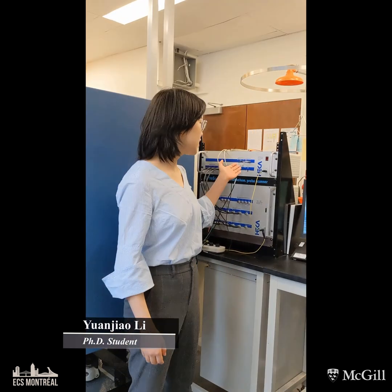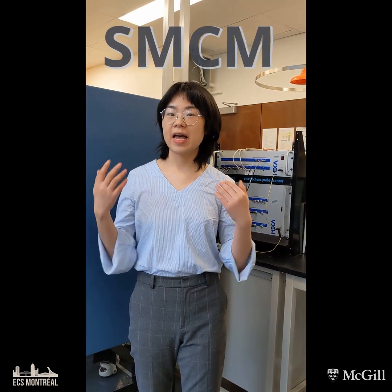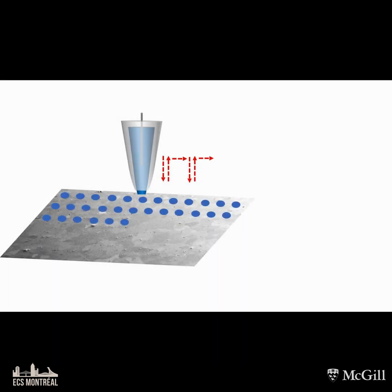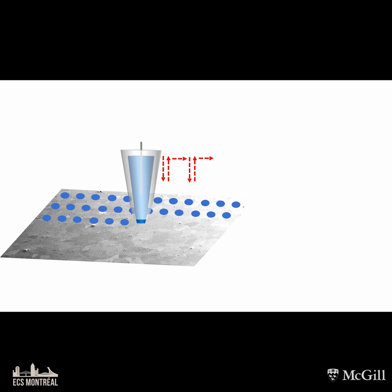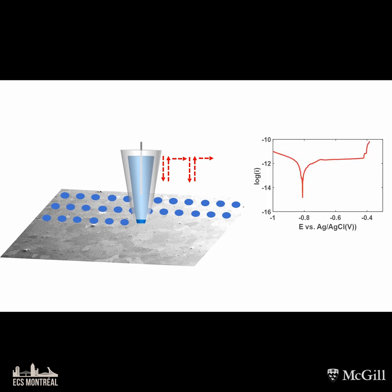Hello everyone, this is Yuanjiao. Using this equipment, we can run another technique: the scanning micropipette contact method, or SMCM. In the setup, a solution-filled micropipette is used to form a droplet at the end. Then, the micropipette is pushed to the substrate surface until the droplet contacts the surface, and electrochemical measurements can be carried out on the droplet's wetted surface.